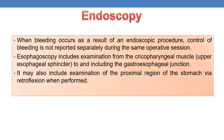A few important points regarding endoscopy: when bleeding occurs as a result of an endoscopic procedure, control of bleeding is not reported separately during the same operative session — because that procedure itself is causing the bleeding. Also, esophagoscopy includes examination from the cricopharyngeal muscle, the upper esophageal sphincter, to and including the gastroesophageal junction, and may include examination of the proximal stomach via retroflexion when performed.